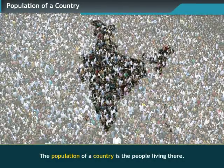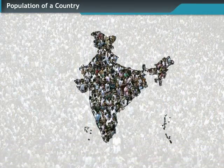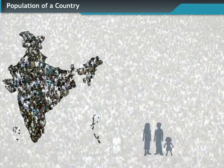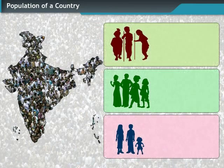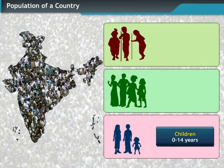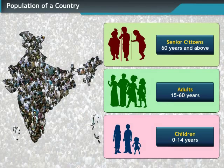The people living in a country is its population. It is broadly divided into three sections: 14 years and under consists of children, 15 to 60 years make the adult group, and 60 years and over are termed as senior citizens.